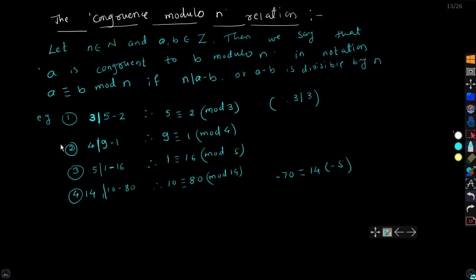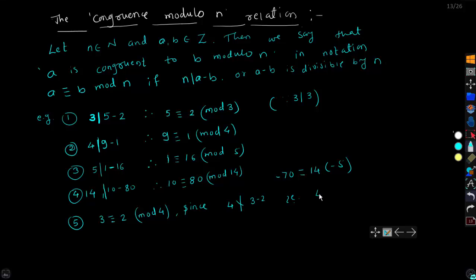For a counter-example: 3 is not congruent to 2 modulo 4, because 4 does not divide 3 minus 2, that is 4 does not divide 1.